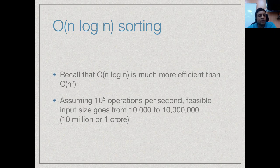O(n log n) is much more efficient than O(n²). On a standard desktop machine doing 10⁸ operations per second, the feasible input size goes from 10,000 for an O(n²) algorithm to 10 million (1 crore) for an O(n log n) algorithm. For large volumes of data, O(n log n) makes sorting feasible in reasonable time whereas O(n²) would take years.